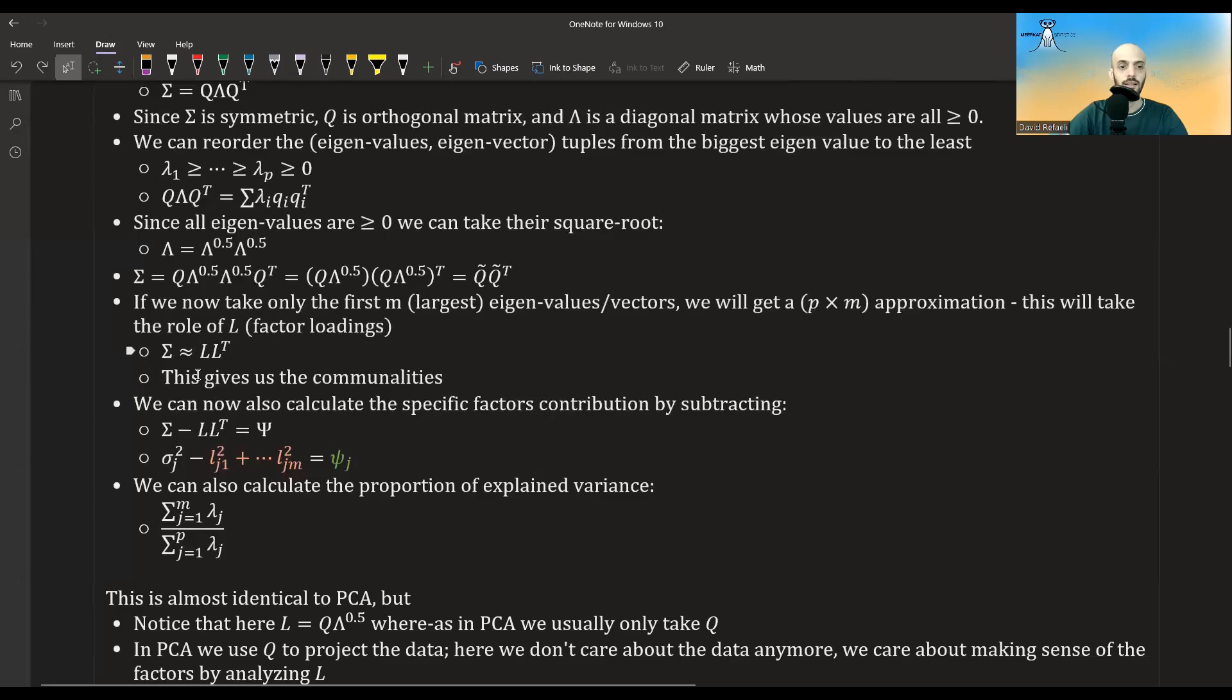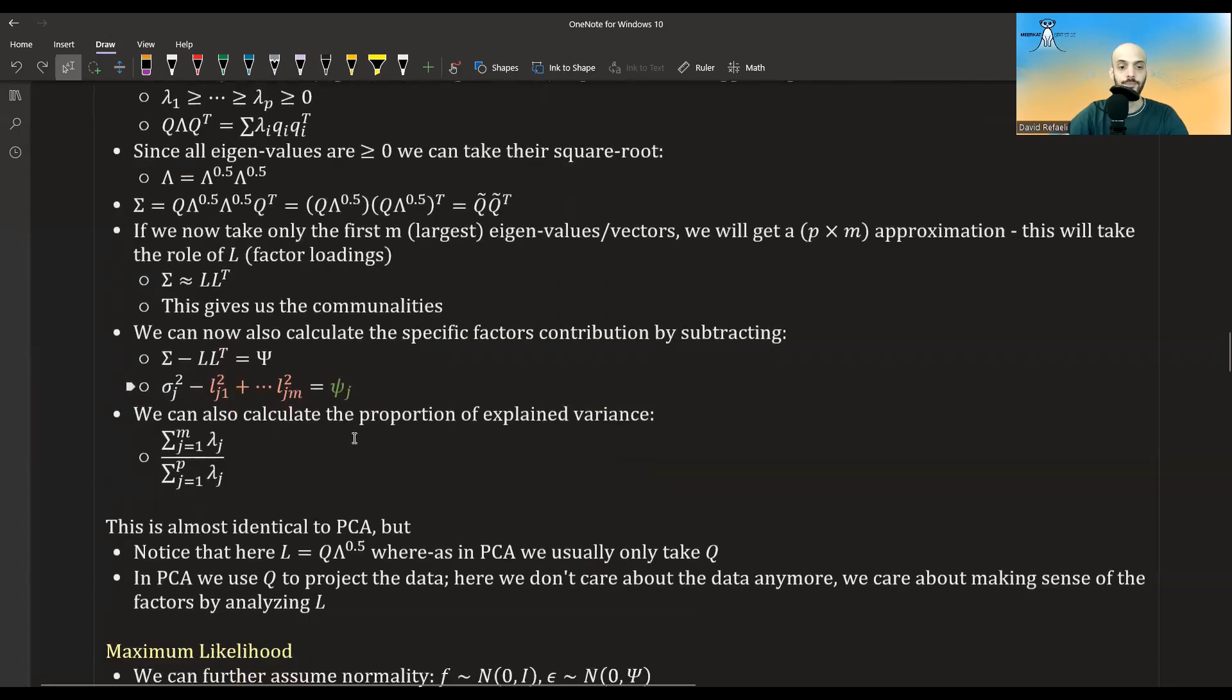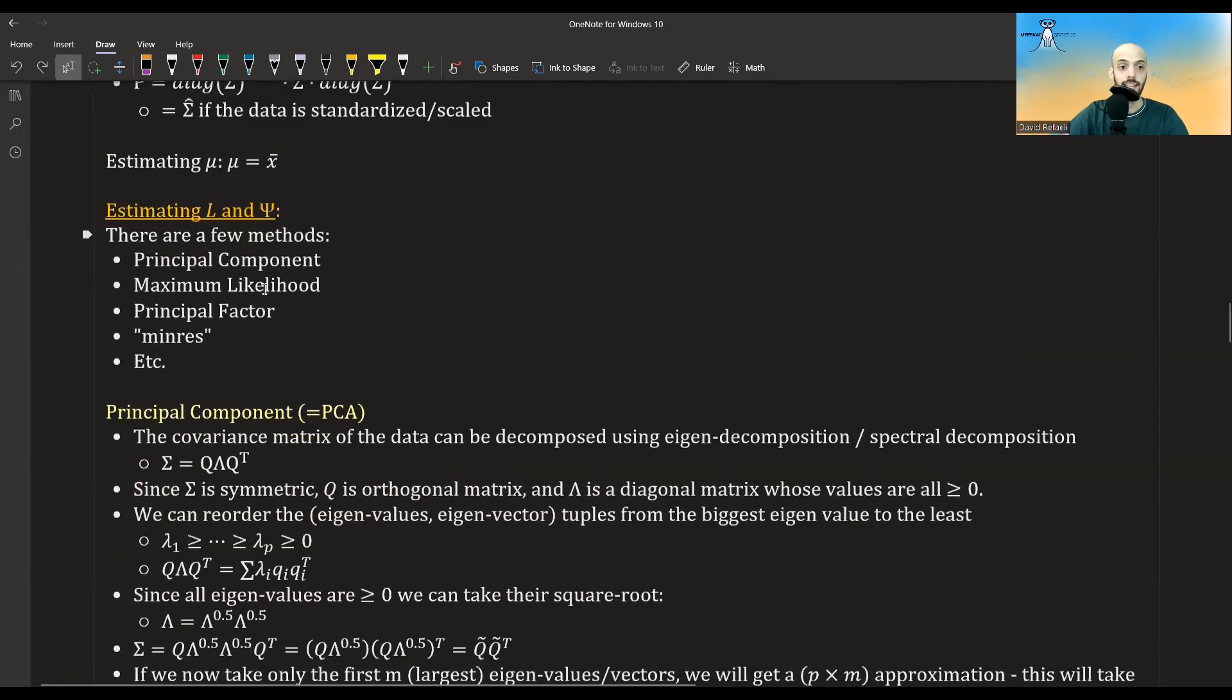Multiplying it and taking the diagonal will give us the commonalities. And now we can also calculate the specific factors. So the psi, if we subtract L times L transpose from sigma and then look at the diagonals. So whatever we will have in the diagonals, we will denote it as the psi. And so we got what we wanted. We estimated L. We estimated psi.